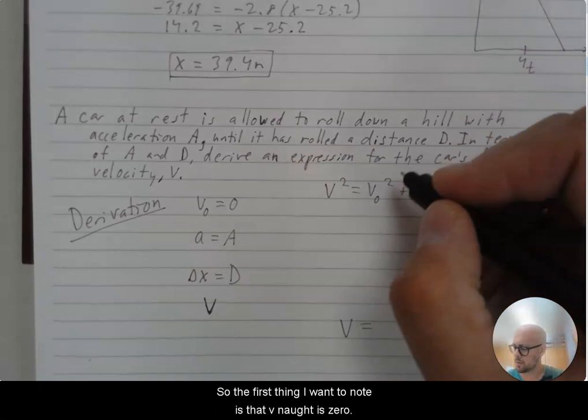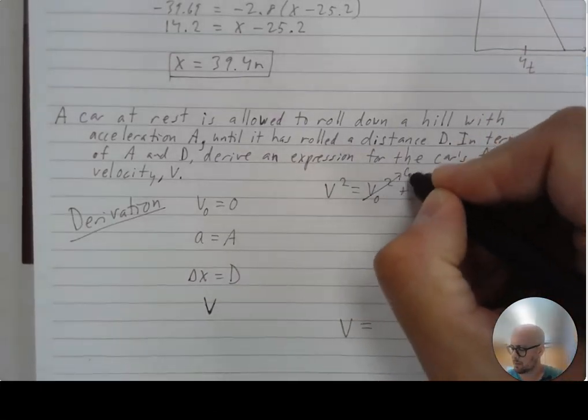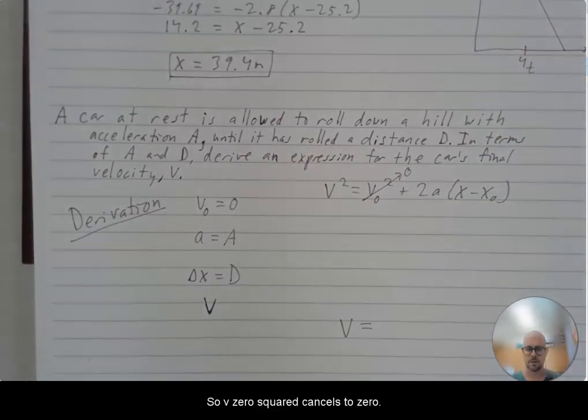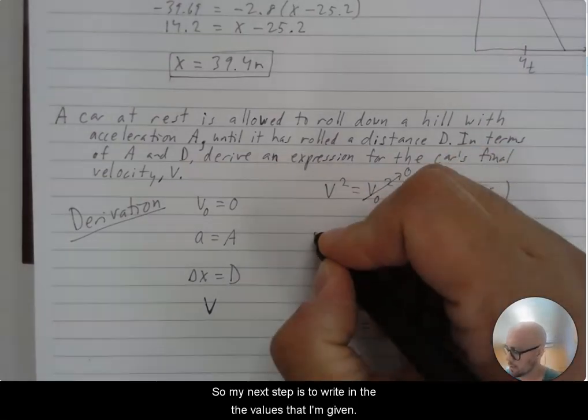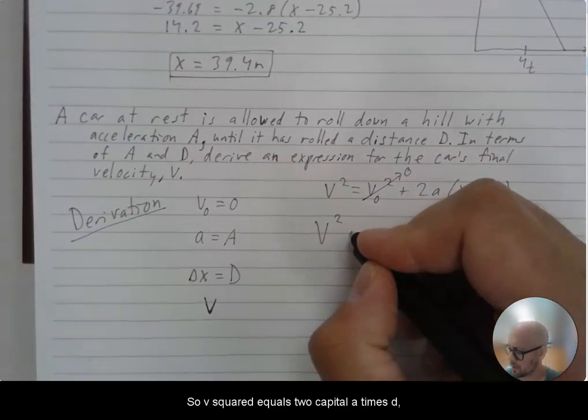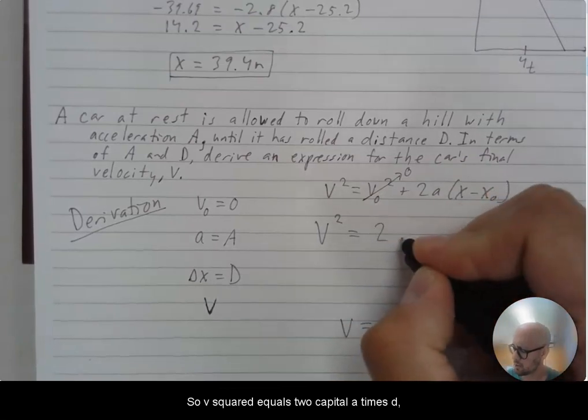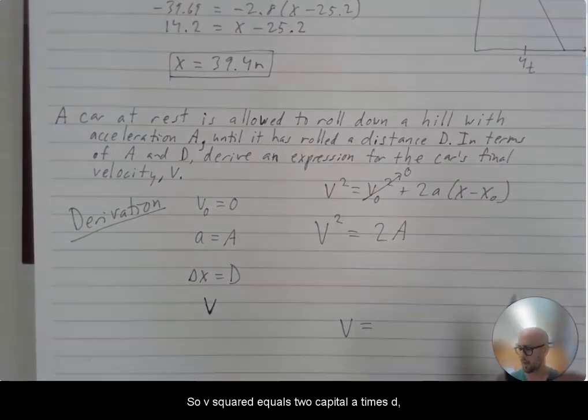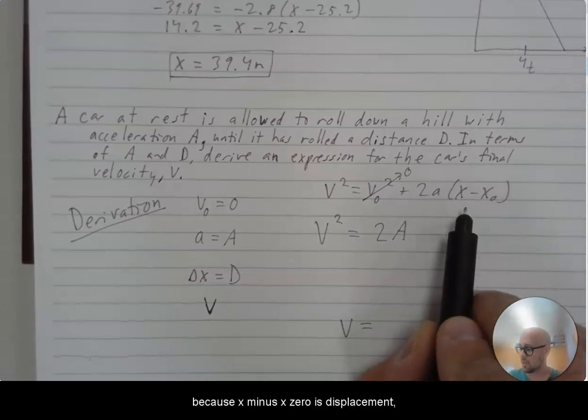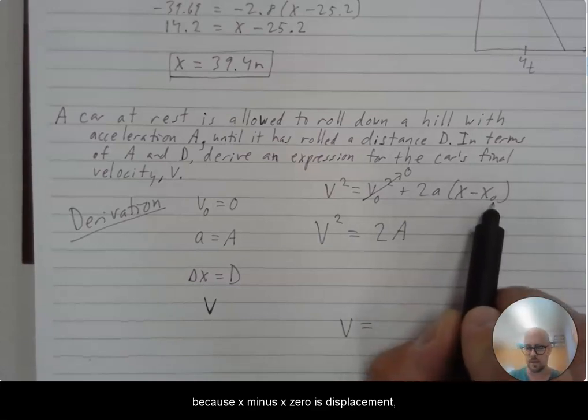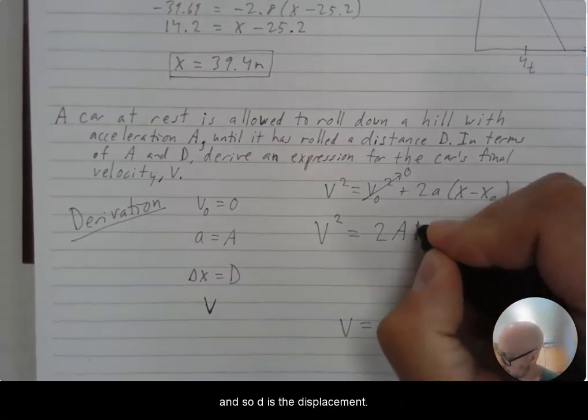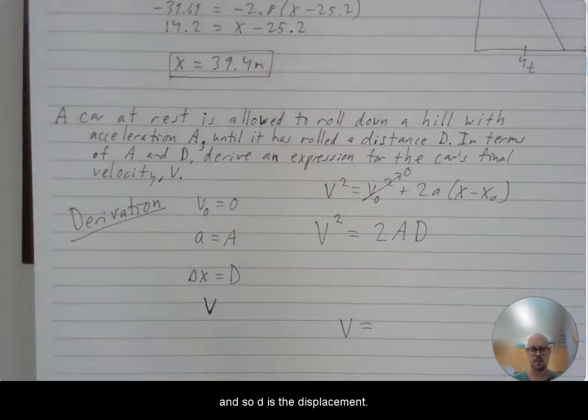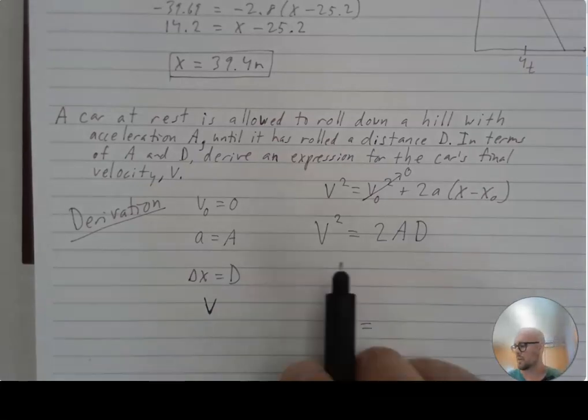So the first thing I want to note is that v naught is zero. So v naught squared cancels to zero. So my next step is to write in the values that I'm given. So v squared equals two capital A times d because x minus x naught is displacement. And so d is the displacement. And then I solve.